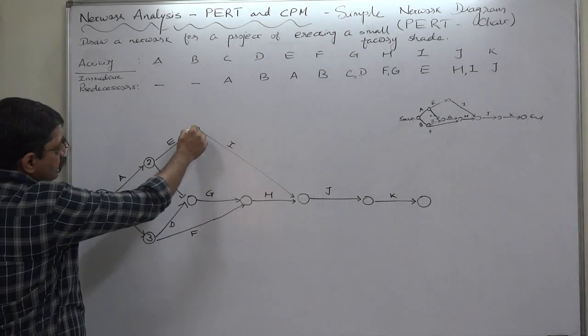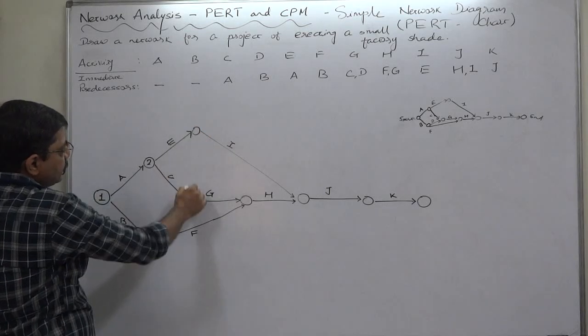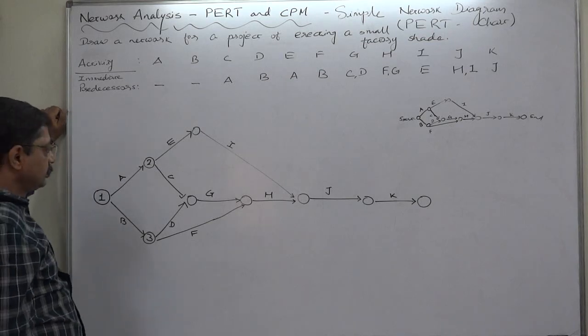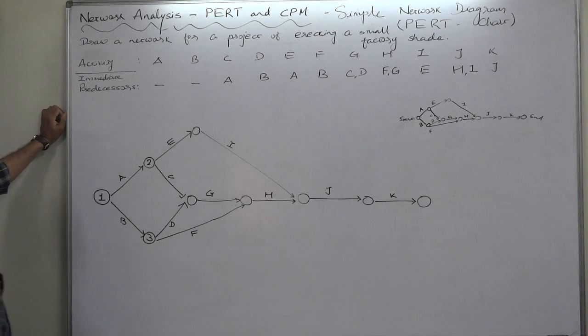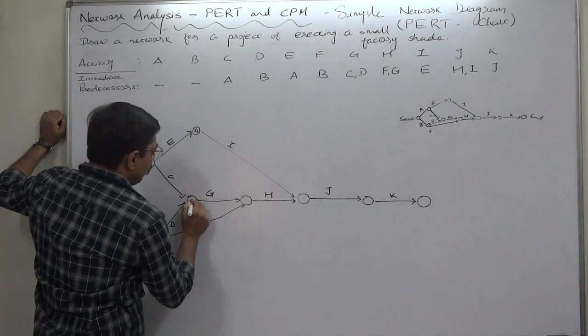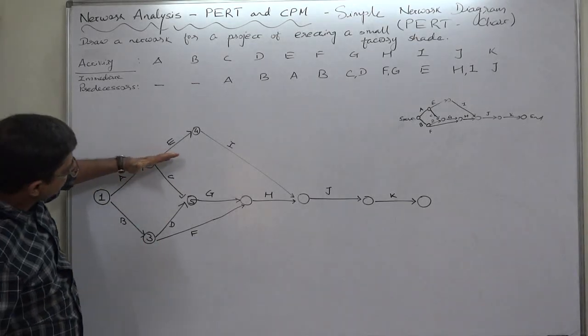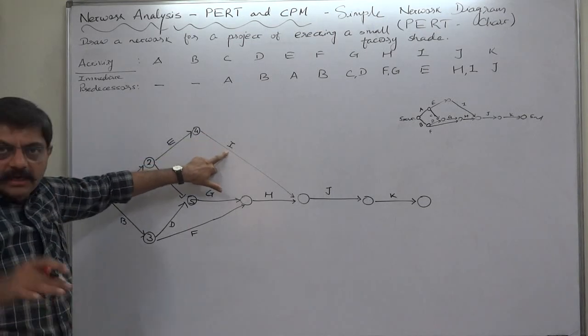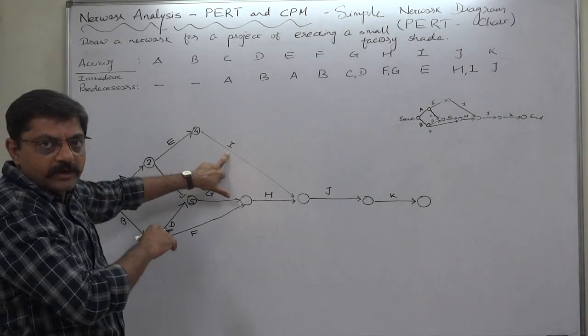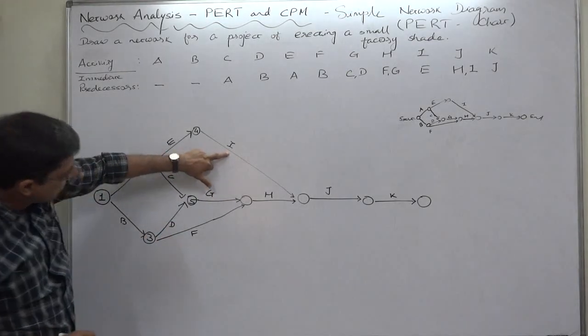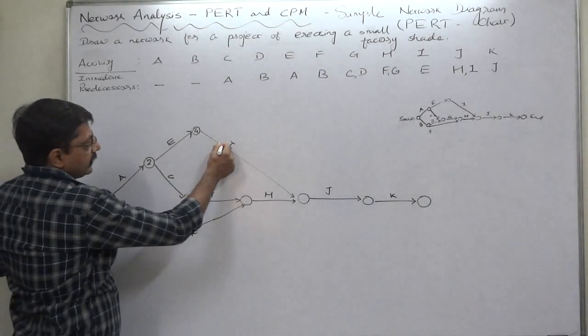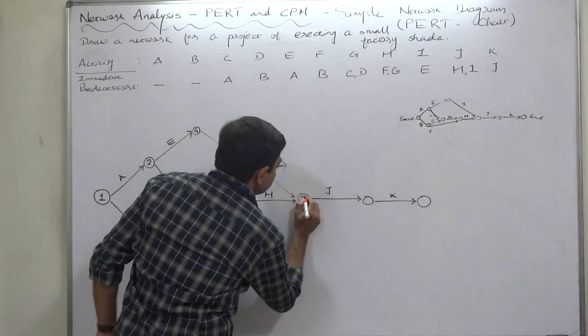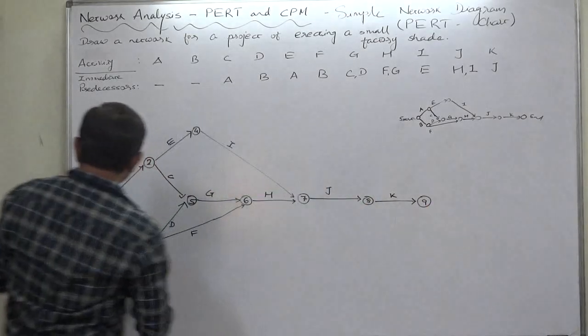Now, if this is exactly—you can see vertically there can be a confusion. It is upon us how to number. It may happen that you have shown E like this and the same node may be appearing here in your notebook when you draw the network chart. Then you can number this as four and this as five. Now this will be six, and now very easy—seven, eight, and nine.